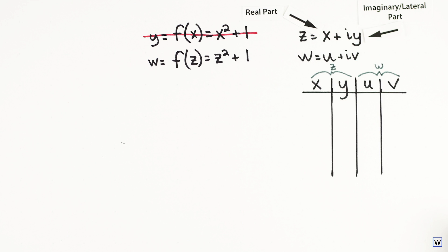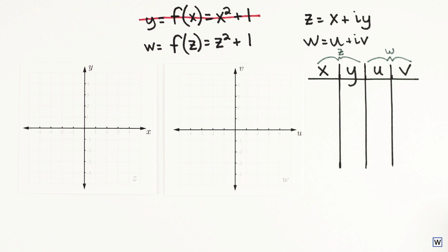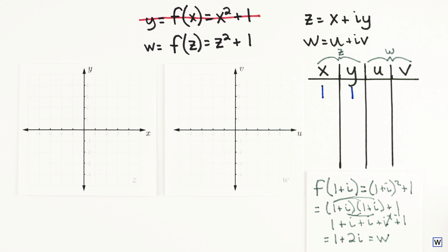We can now experiment with our function f of z equals z squared plus 1. If we plug in a complex number to our function, for example z equals 1 plus i, we can do a little algebra and obtain our result, w equals 1 plus 2i. Plotting our inputs and outputs, we see that the point 1 plus i on our input plane was pushed or mapped by our function to 1 plus 2i in our output plane.